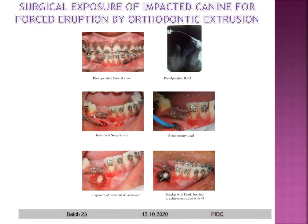The last procedure is surgical exposure of an impacted canine for forced eruption by orthodontic extrusion. An impacted canine is present beneath the bone; as per the orthodontist's requirements the canine needs to be brought out. As seen in the preoperative IOPA, using a blade the soft tissues are removed to reach the tooth beneath the bone, and then a bracket is placed so that the orthodontic procedure can be carried out.